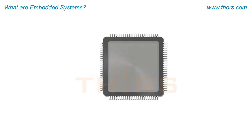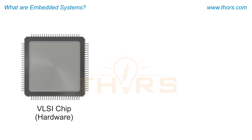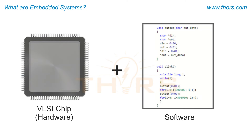Embedded systems use VLSI chips, which are the hardware components available in different sizes and complexities. In addition to hardware, embedded systems also use software to perform desired functions.